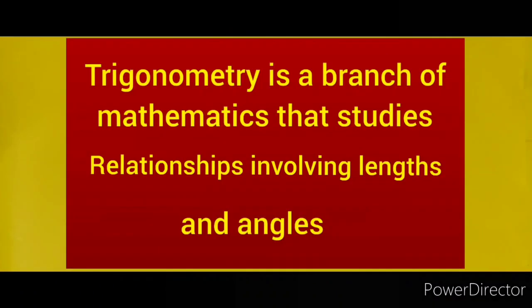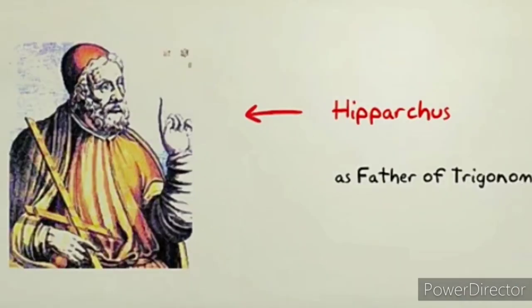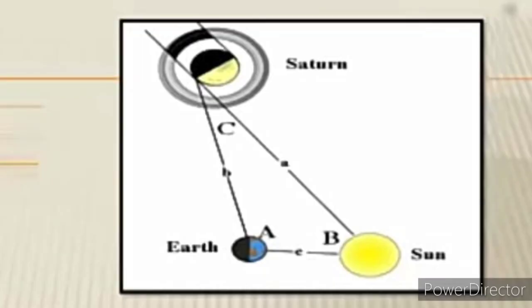Trigonometry is a branch of mathematics that studies relationships involving lengths and angles. The founder of trigonometry is called Hipparchus, so Hipparchus is known as the father of trigonometry. He invented this concept in order to study astronomy — trigonometry helps to understand the various positions of celestial bodies like stars, planets, and moon.